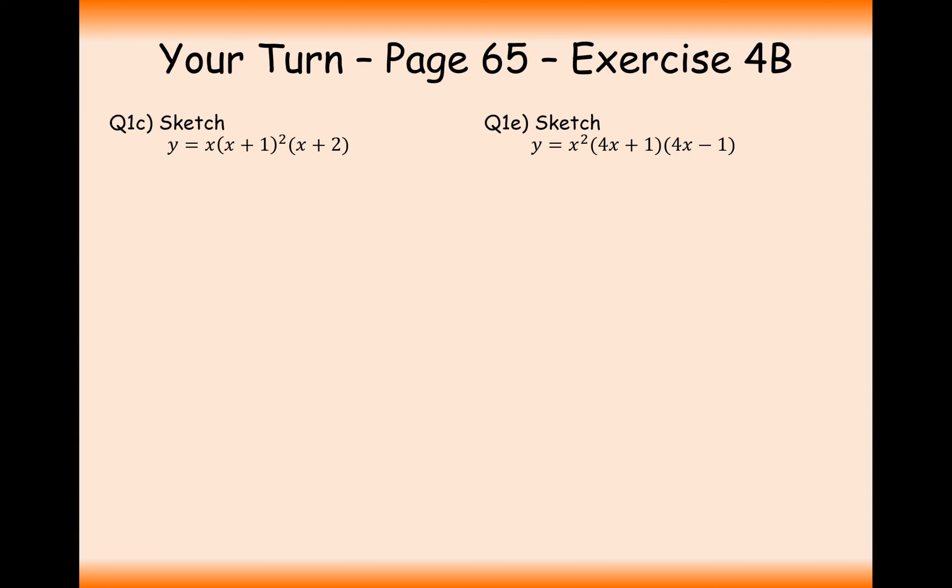Well done for having a go at these questions then. Let's have a go at answering them. So in this case here, what we're going to get is one solution at x equals 0, one repeated solution at x equals minus 1, and one solution at x equals minus 2. So we're going to have intersections at 0, repeated at minus 1, and at minus 2.